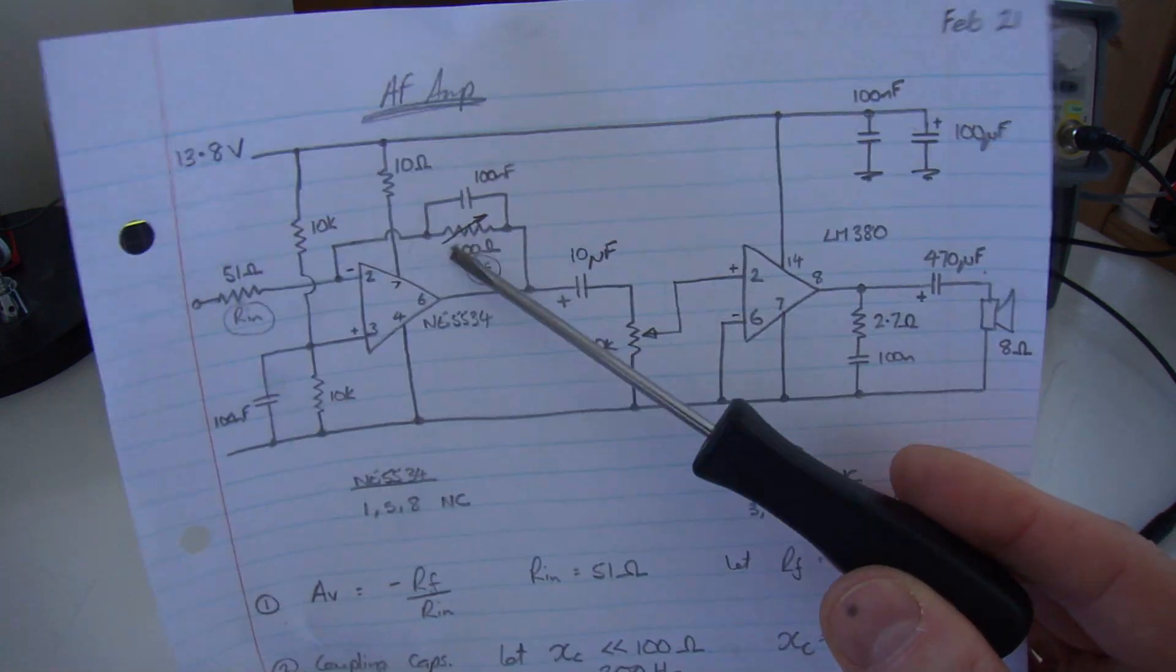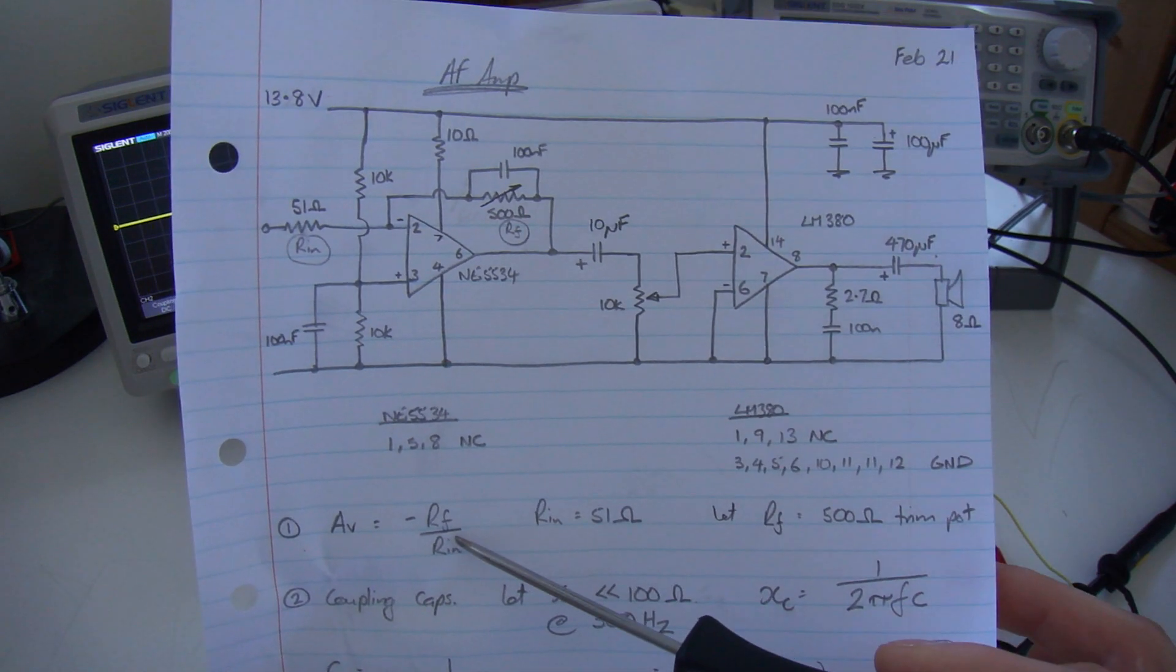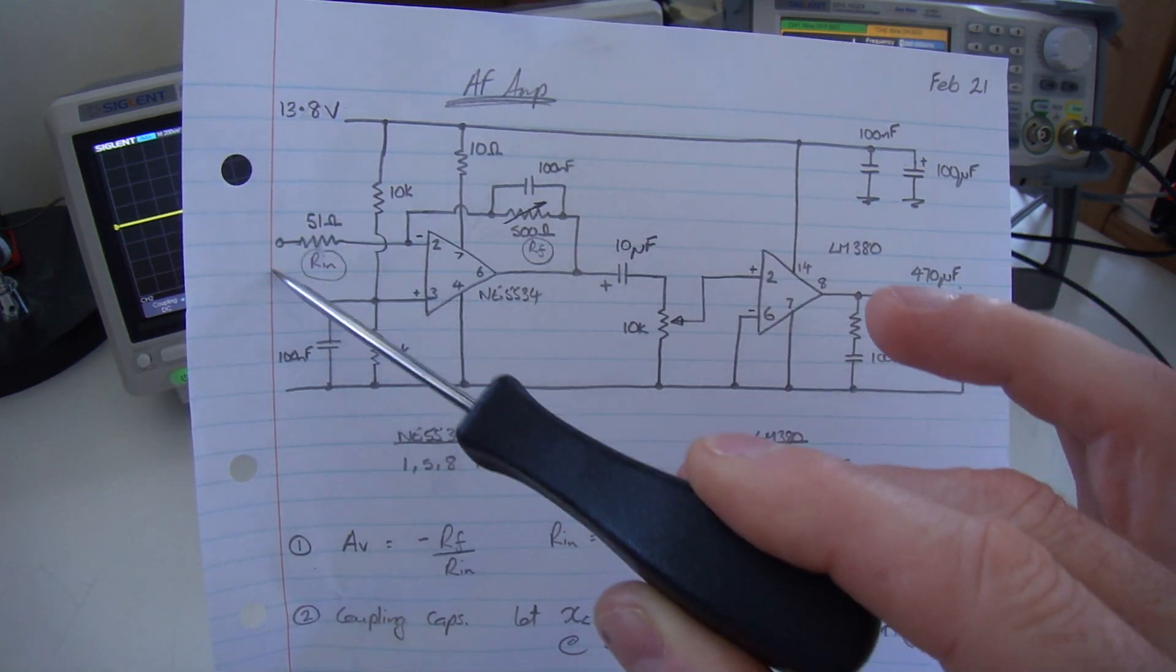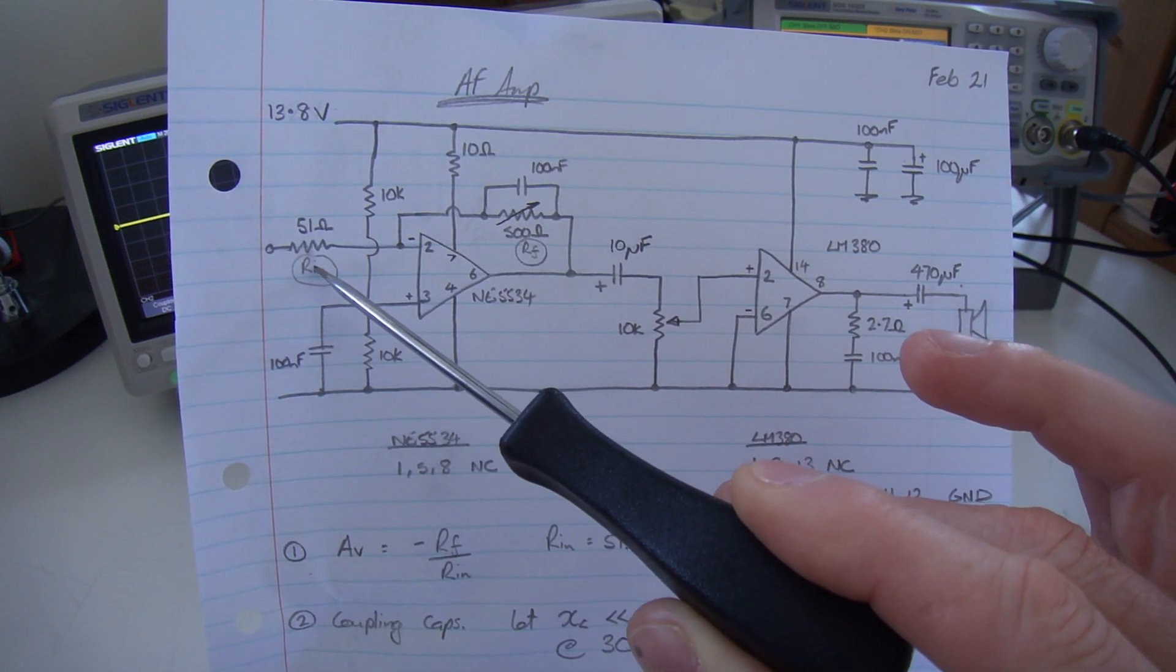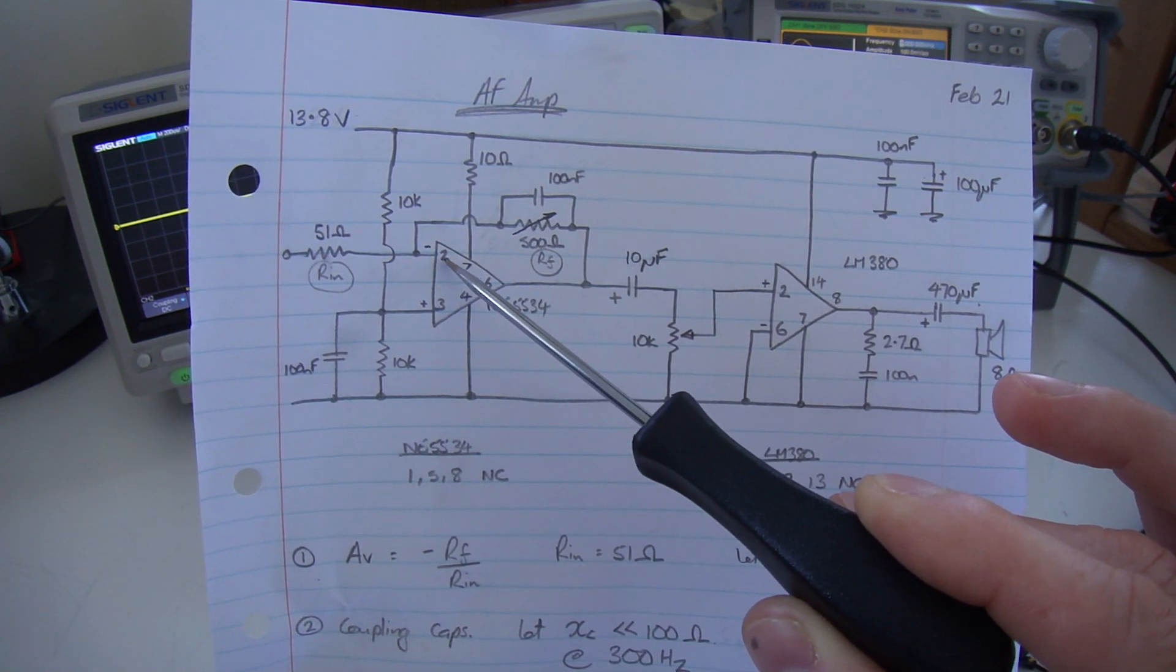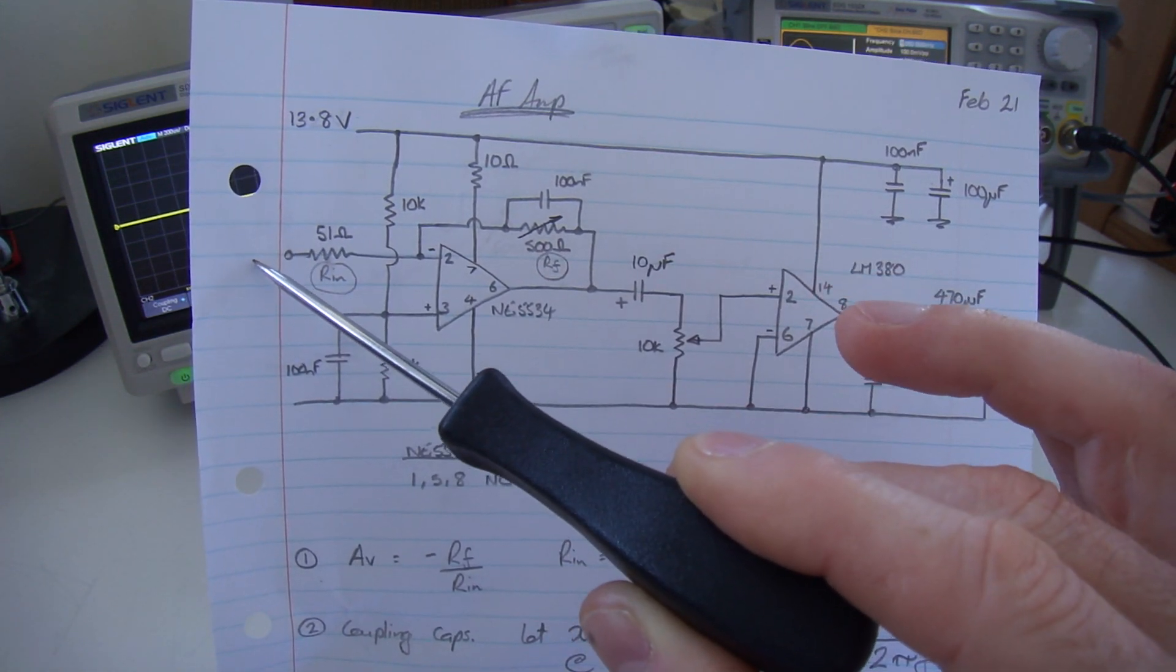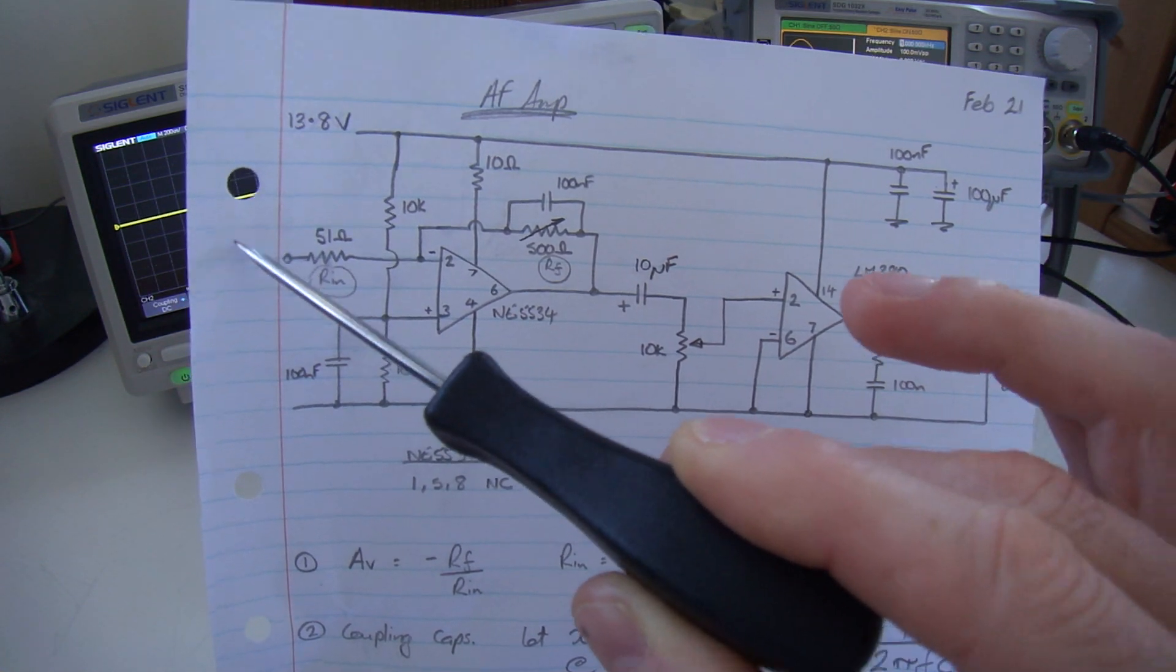The formula for this particular inverting operational amplifier is minus RF over RN, where RF is our feedback resistor here and RN is our input resistance. In this particular case, I've fixed RN to be 51 ohms, which is close to 50 ohms. I've done that because of the high input impedance of this op amp, which means that the product detector is seeing a nice 51 ohm termination, so it's terminated well.